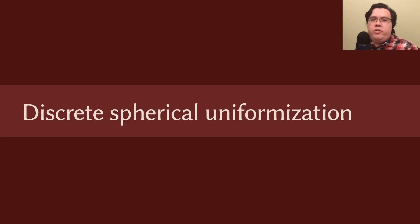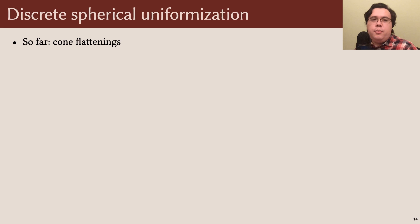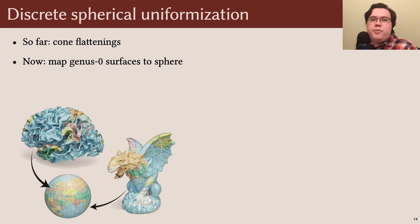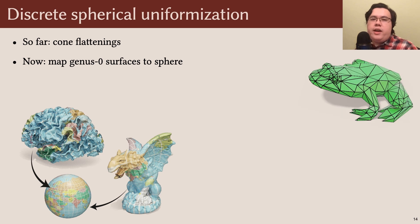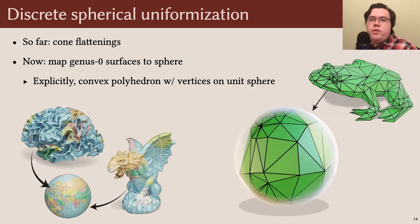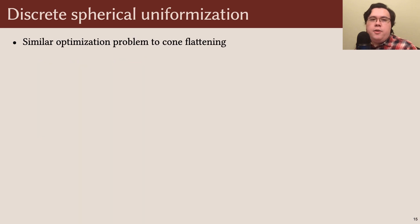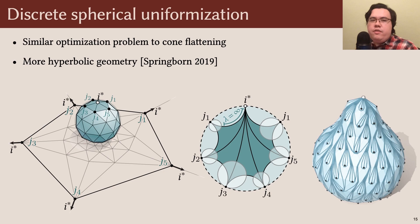Finally, I'll discuss our spherical uniformization algorithm. So far I've been talking about flattening, but we can also apply all this machinery to map surfaces to the sphere. More explicitly, given any genus-zero triangle mesh, we compute a discretely conformally equivalent polyhedron which is convex and inscribed in the sphere. This boils down to a similar, but more complex, optimization problem involving even more hyperbolic geometry.